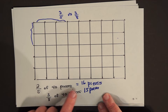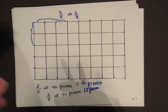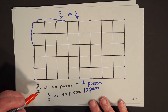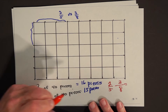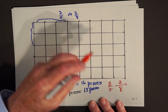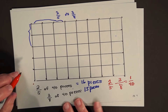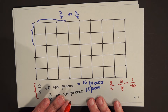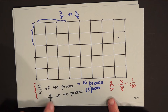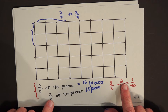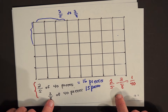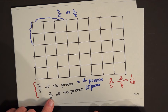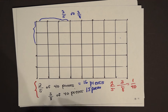Now we couldn't compare the 2 and the 3 before because they were modifying different nouns. But we can compare the 16 and the 15 here because all the pieces are the same size. So 2 fifths of 40 pieces is one piece more than 3 eighths of 40 pieces. Students often look at the numerators and think they're taking away more than what's there — but that's like saying 2 dimes minus 3 pennies is a problem. You're still taking 3 pennies from 2 dimes.